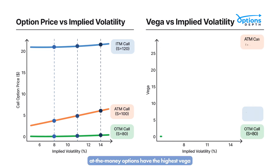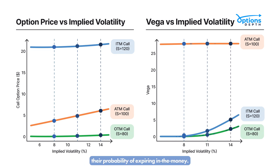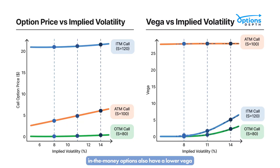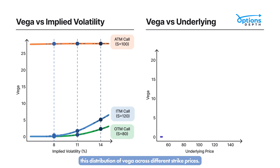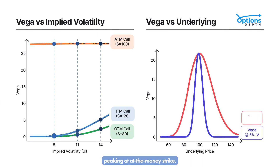At the money options have the highest Vega because they contain the most extrinsic value — any change in IV will drastically affect their probability of expiring in the money. Out of the money options have lower Vega as their chance of ending in the money is already pretty low, so changes in IV affect them less. In the money options also have a lower Vega compared to at the money, though they still have some extrinsic value. This distribution of Vega across different strike prices tends to form a bell shape, peaking at the at the money strike.